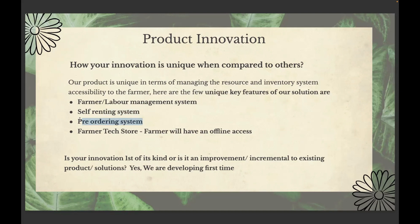We also have a pre-ordering system. Whenever a farmer wants to do cropping, he has to purchase seeds, crops, and pesticides. In reality, the farmer goes to town and buys from retailers, often not at MRP price. During peak seasons when rain is proper, farmers rush to retailer shops and the same product varies in price from one retailer to another due to the crowded marketplace.